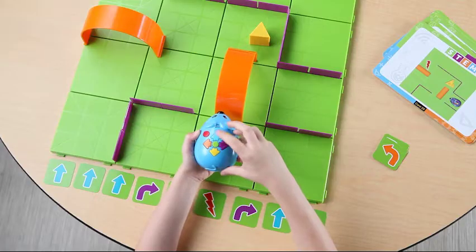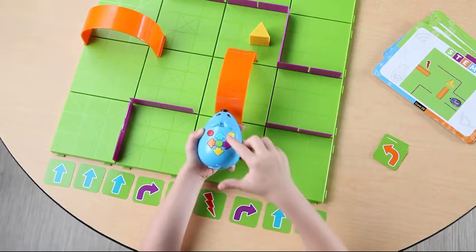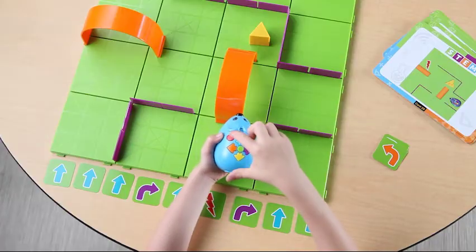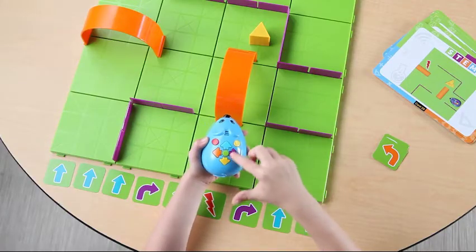Once the path is complete, turn Colby on and he's ready to program. Yellow is your clear button, while green is your start button. The cards are color coded to match the buttons on the mouse for easy programming.